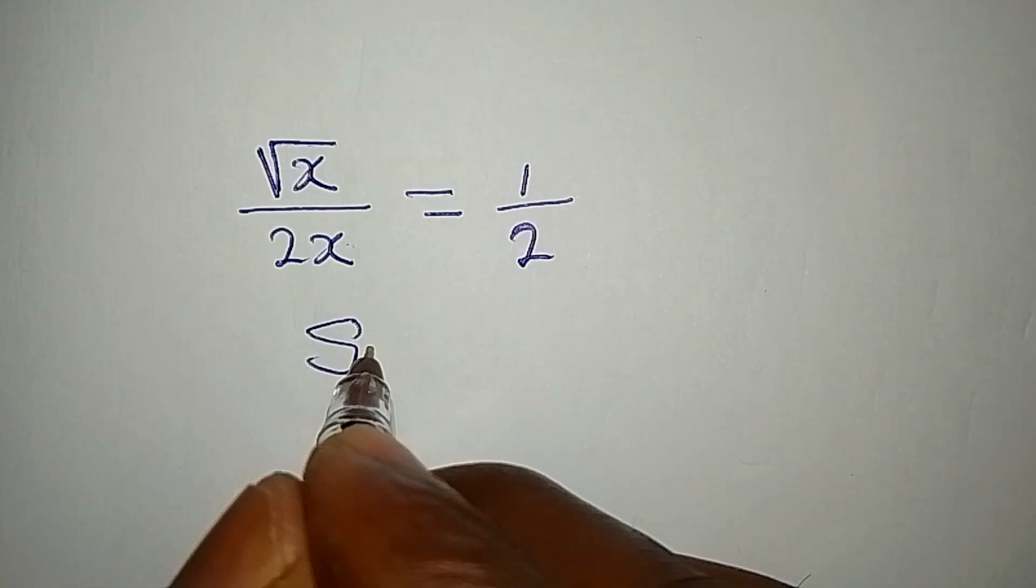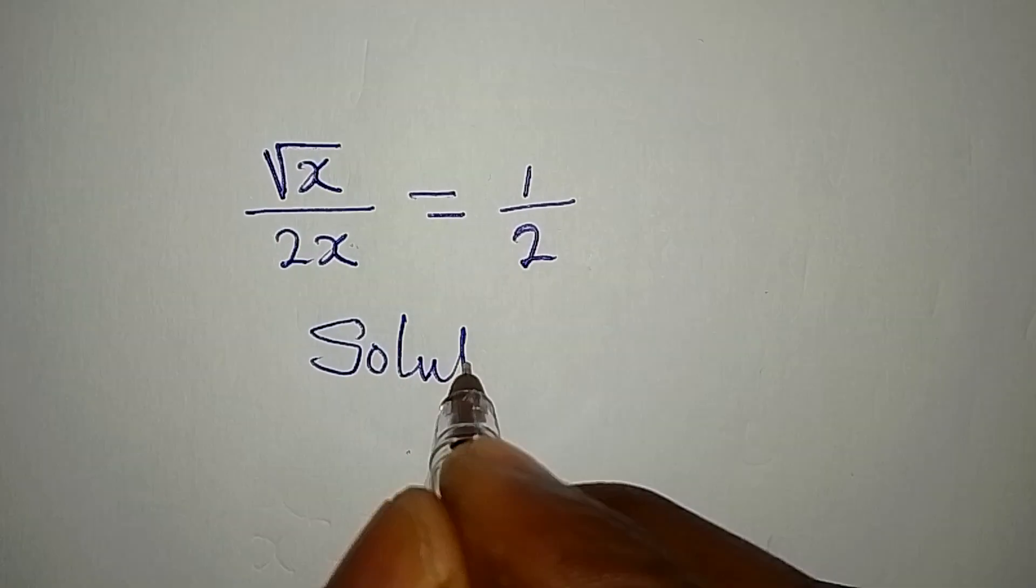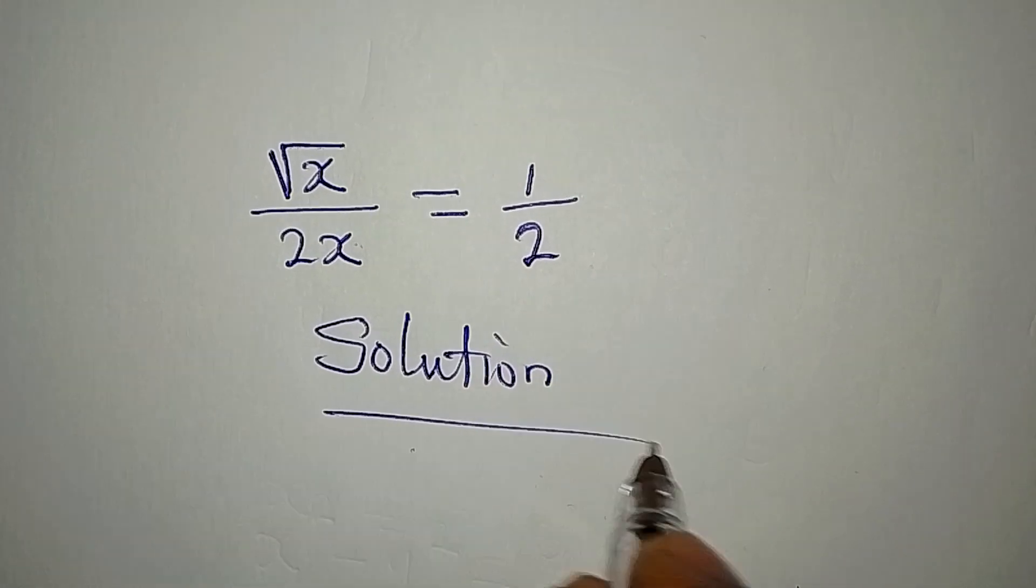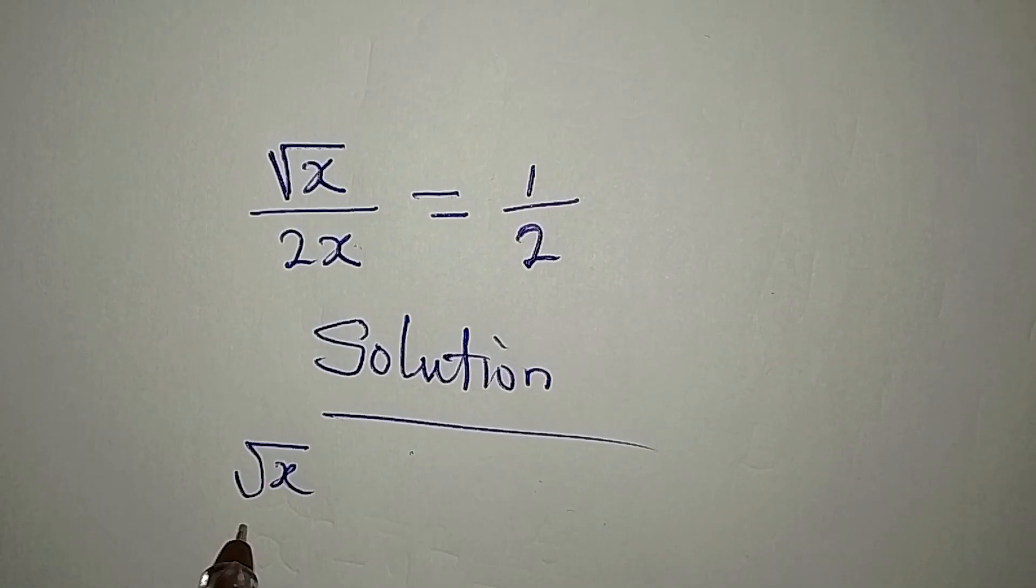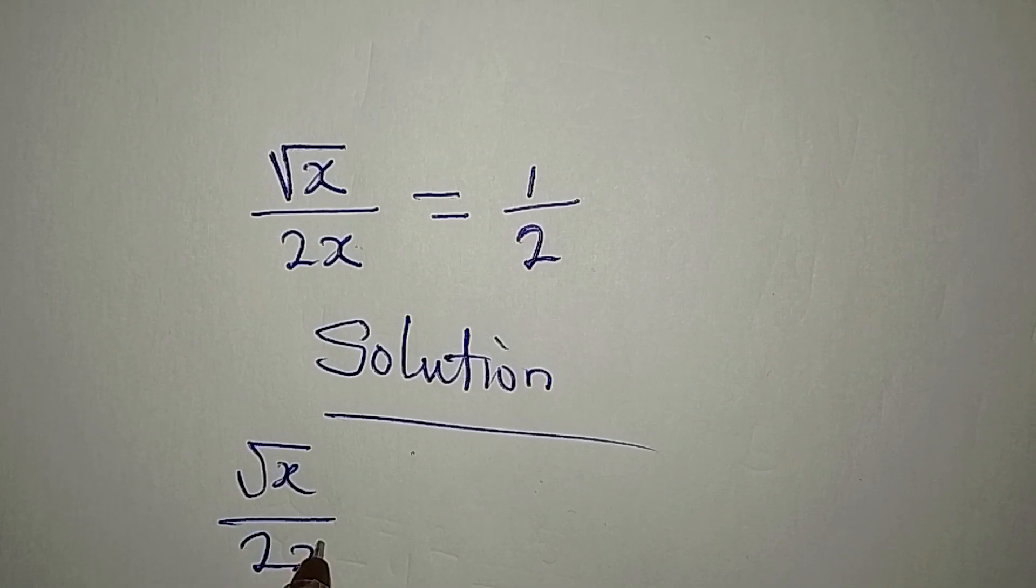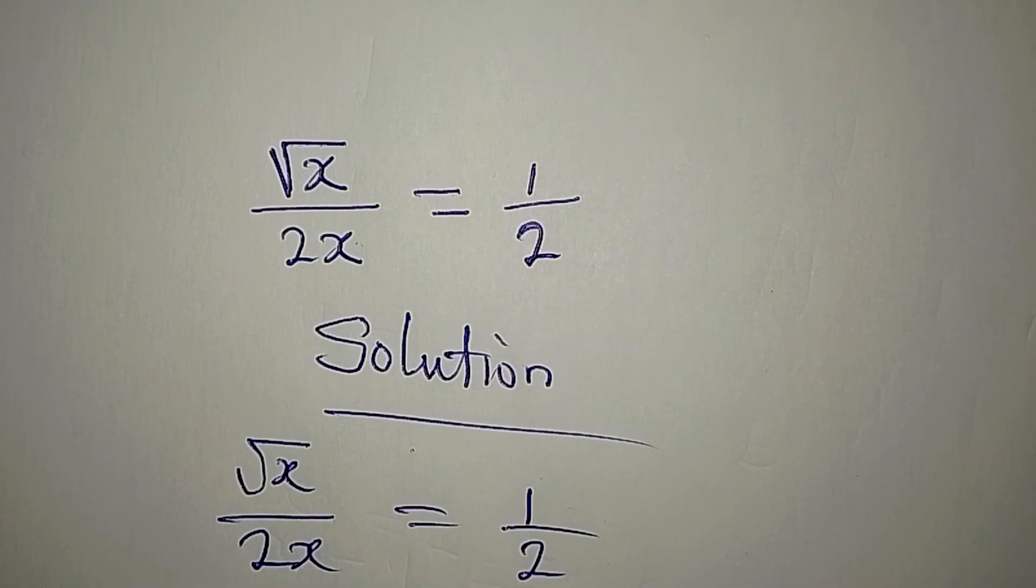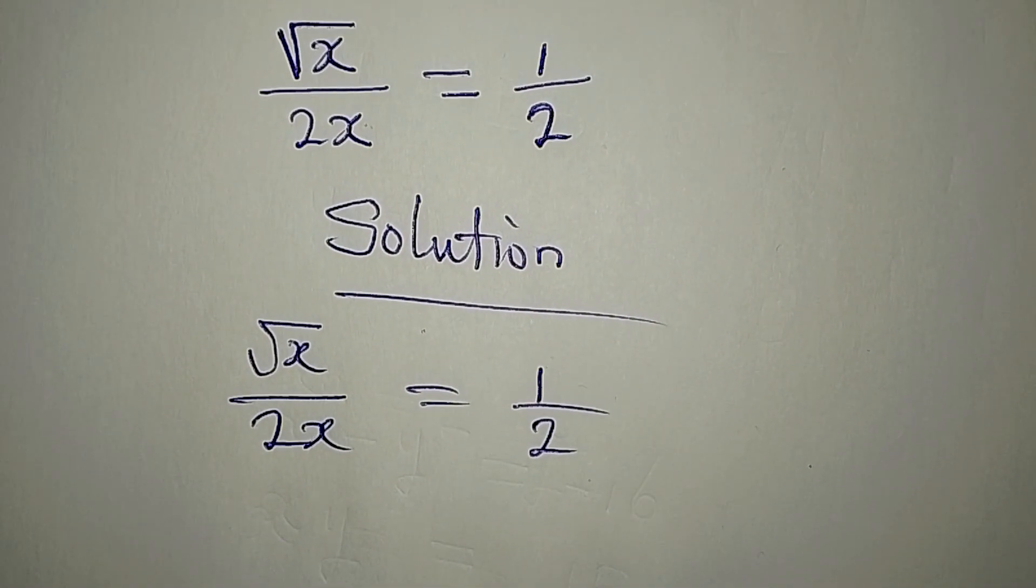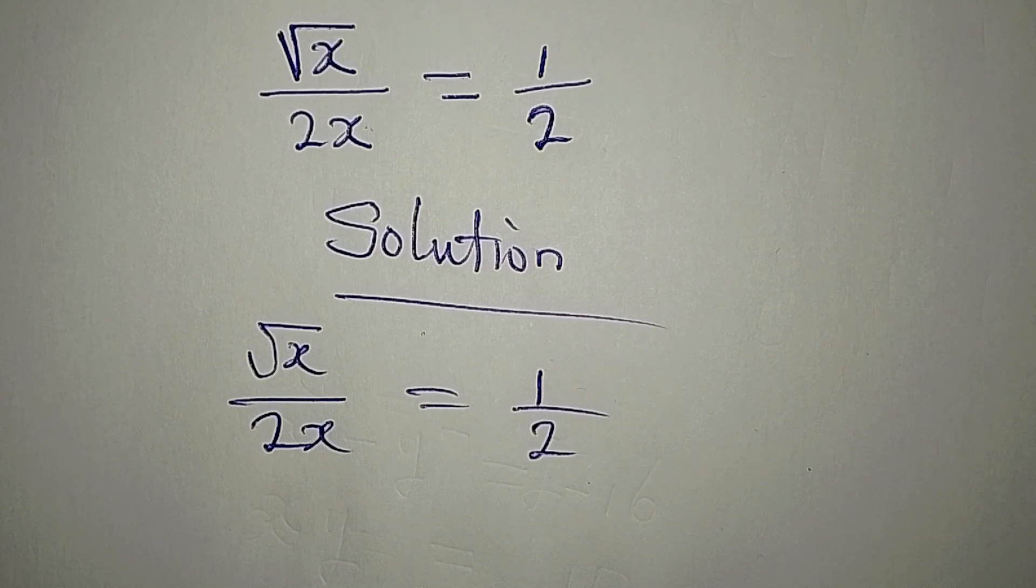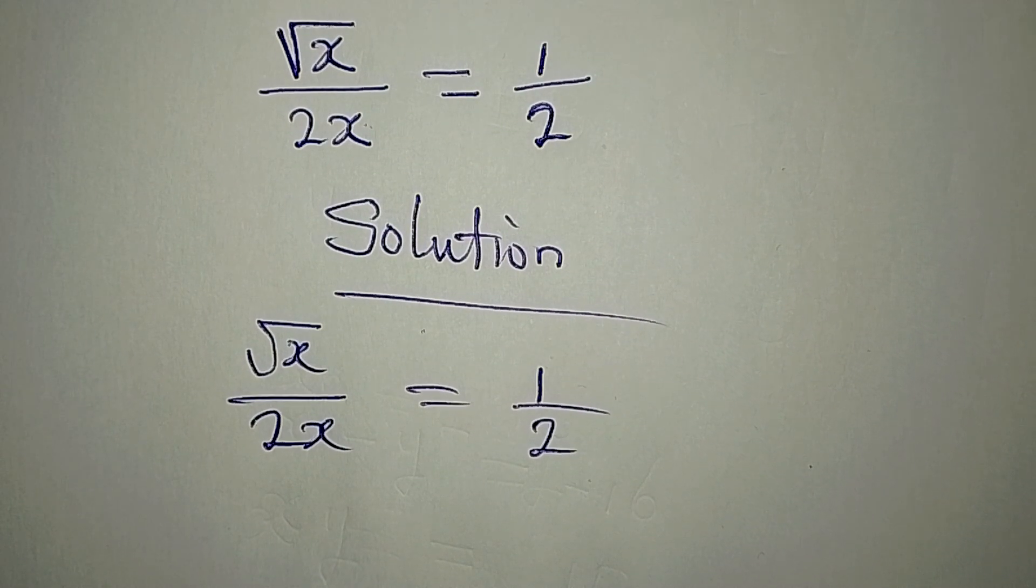Hello everyone, here we have another problem to deal with: square root of x over 2x equal to 1 over 2. If we have this to deal with, what will be the first thing we do? Cross multiply.